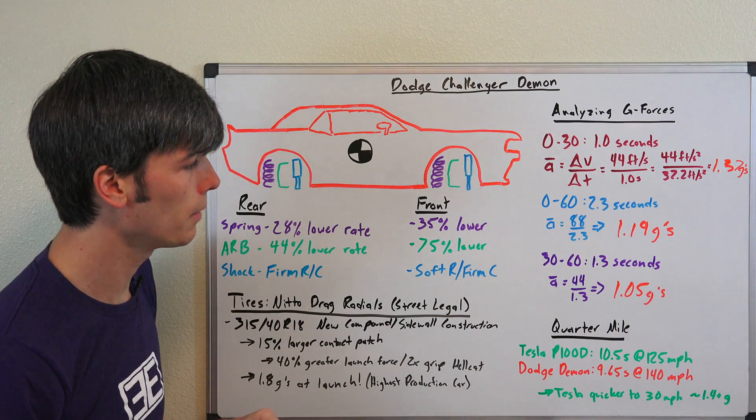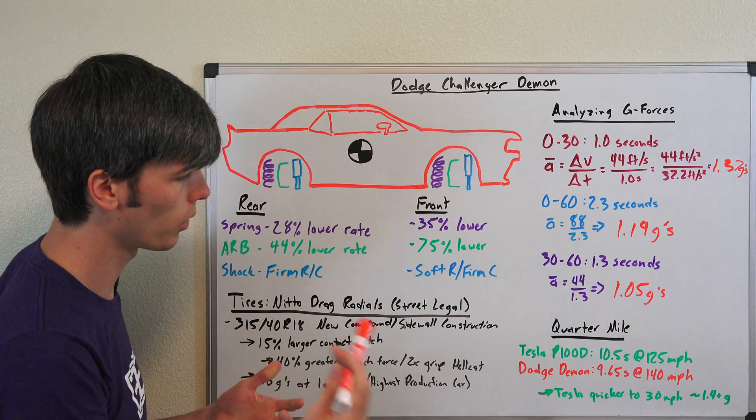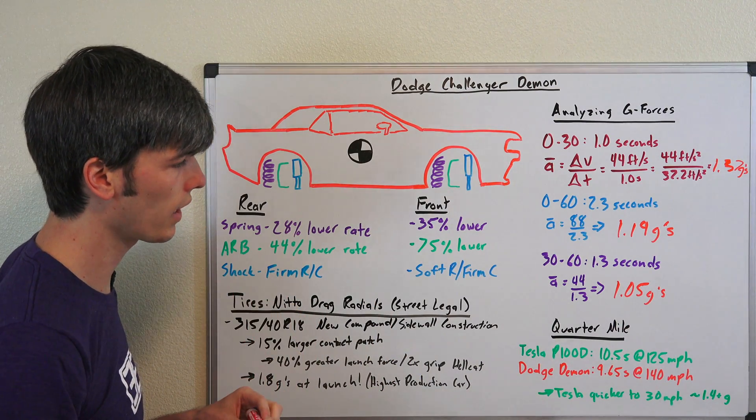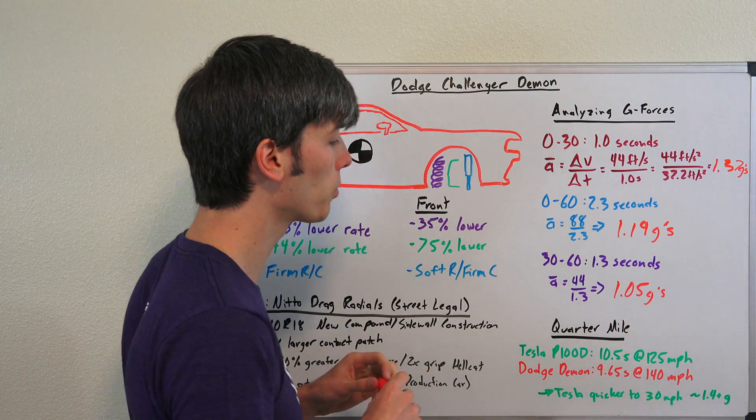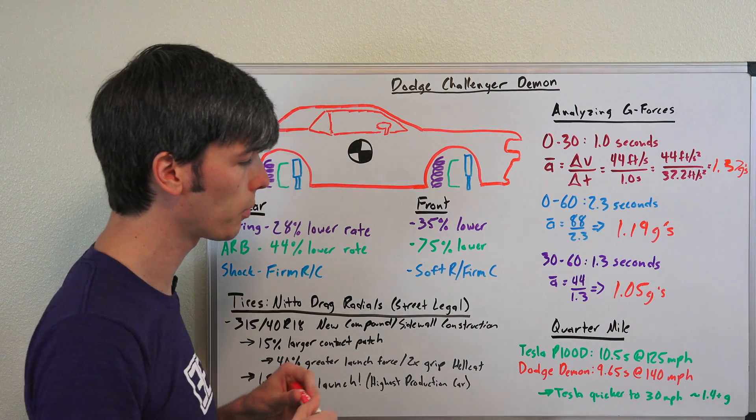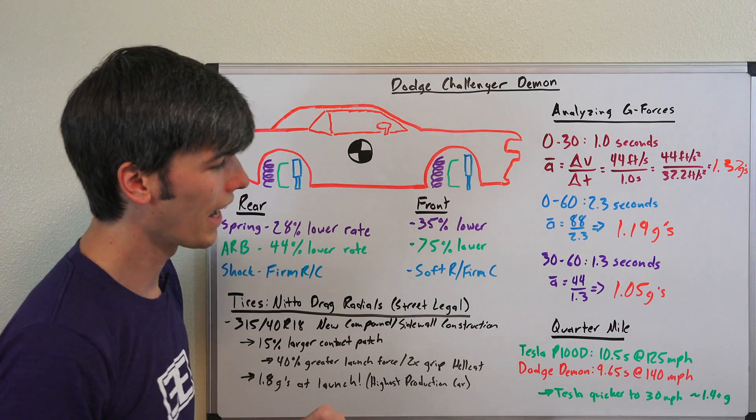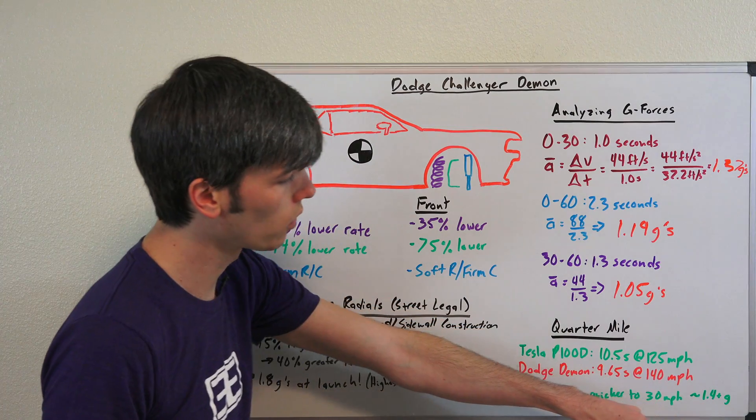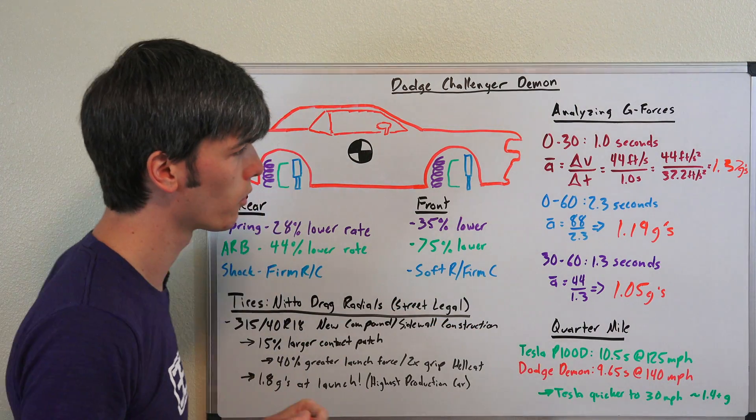Looking at the quarter mile time. The Tesla P100D, which would be the closest competitor as far as the 0 to 60 time of 2.3 seconds, it's able to hit the quarter mile in 10.5 at 125 miles per hour. This is hitting it at 9.65 seconds at 140 miles per hour. The Tesla is actually quicker to 30 miles per hour. And I was looking at Motor Trend's data which they published on their article, and they had a peak G-force shown slightly over 1.4 G's.